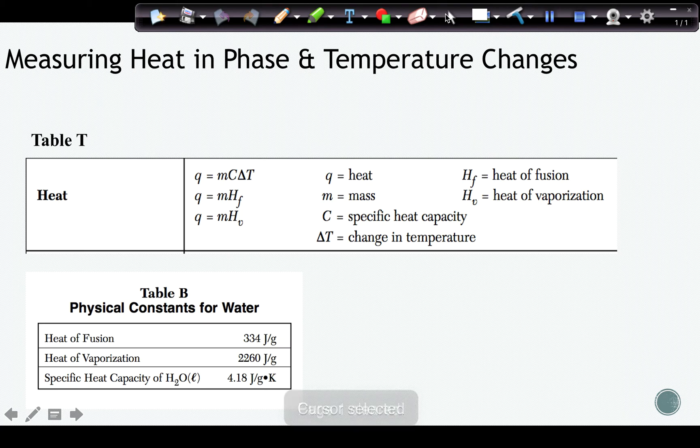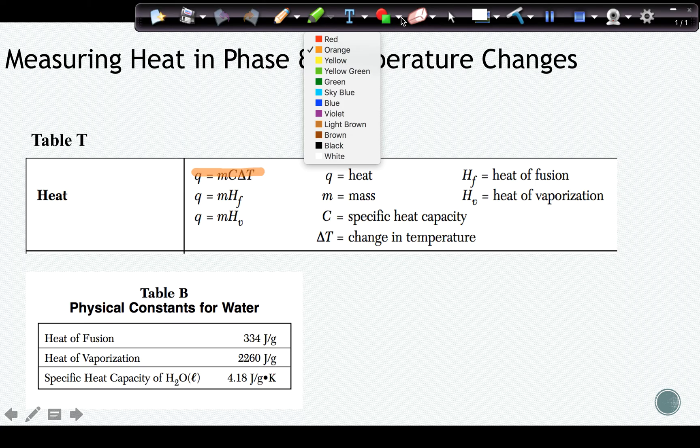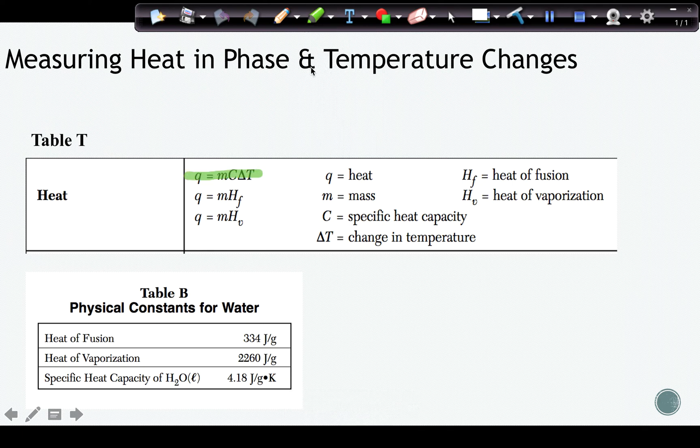We also can measure heat changes in phase and temperature changes. And we have all of these formulas that are on table T. For a temperature change, we're going to use Q equals MC delta T. And for phase changes, we are going to do MHF or MHV. So the heat of fusion and heat of vaporization, these two are each for phase changes. This one here is for temperature changes.